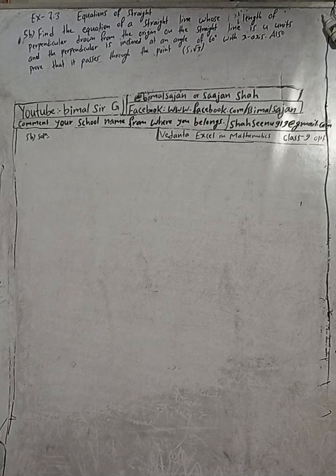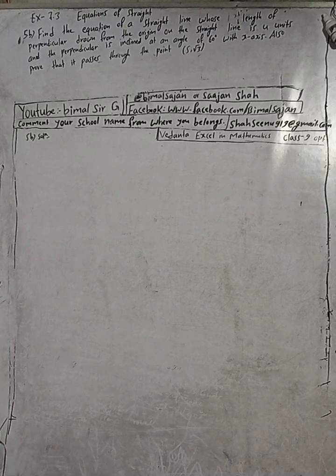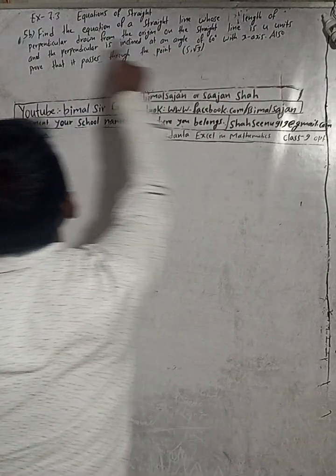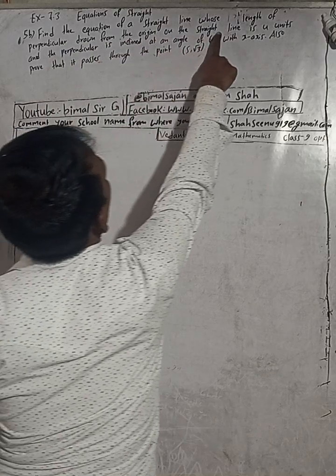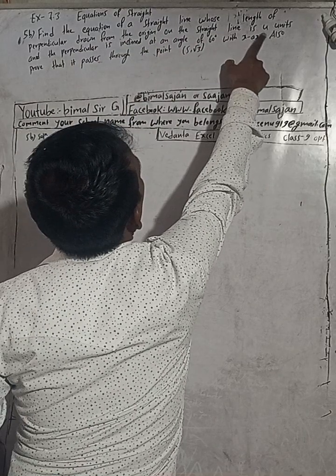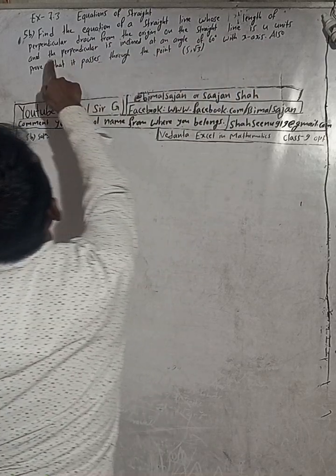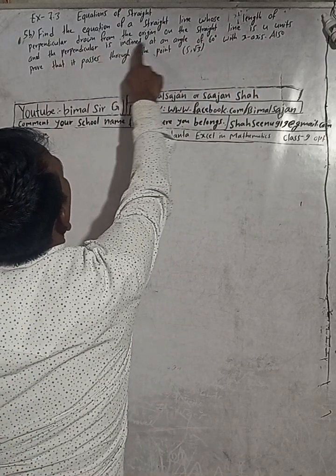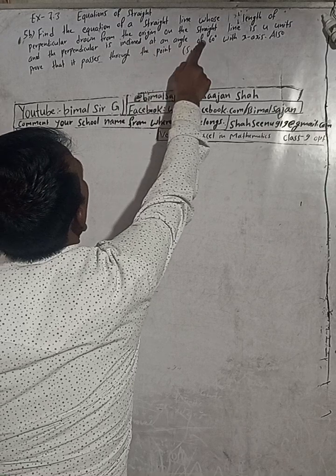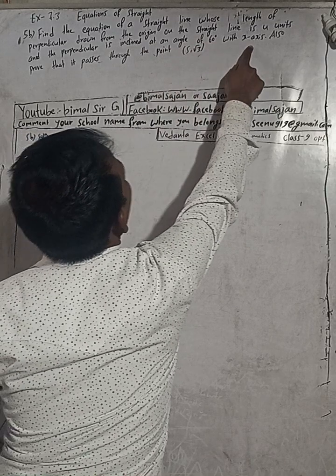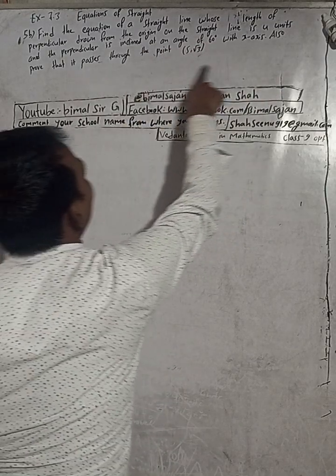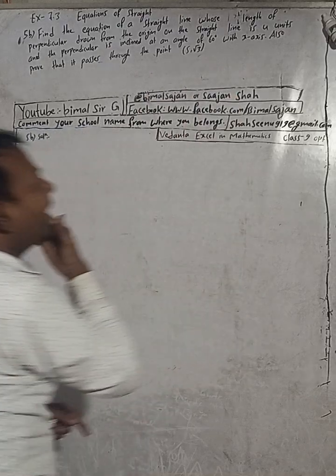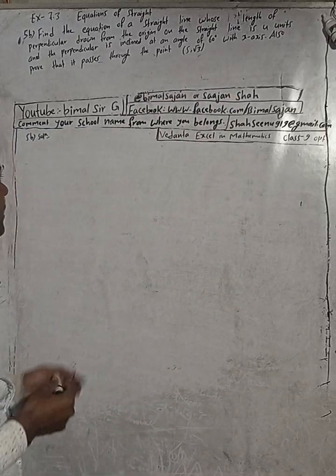Here the question is: find the equation of a straight line whose perpendicular drawn from the origin on the straight line is 4 units, and the perpendicular is inclined at an angle of 60 degrees with the x-axis. Also prove that it passes through the point (5, √3).